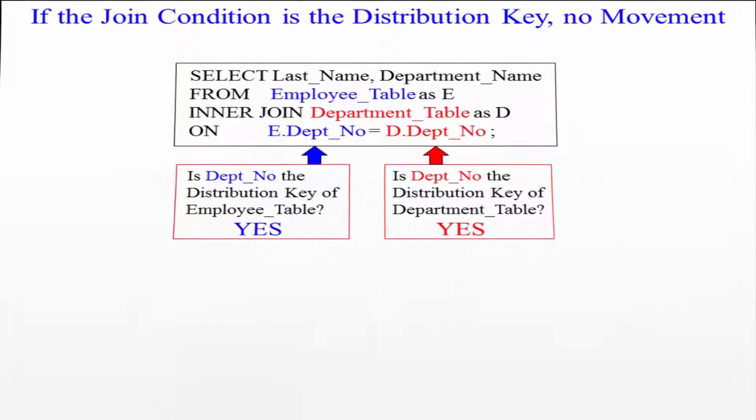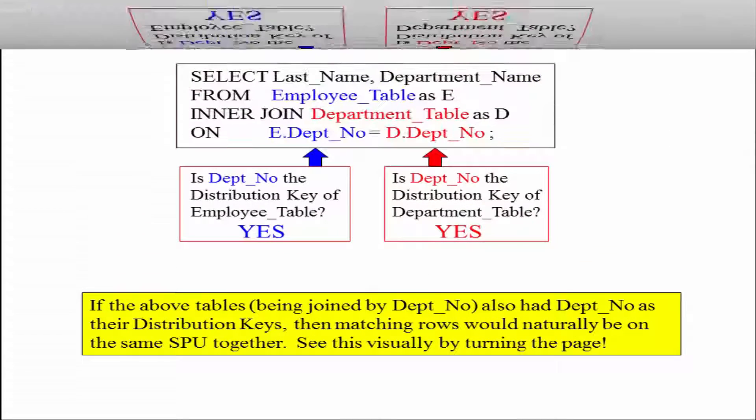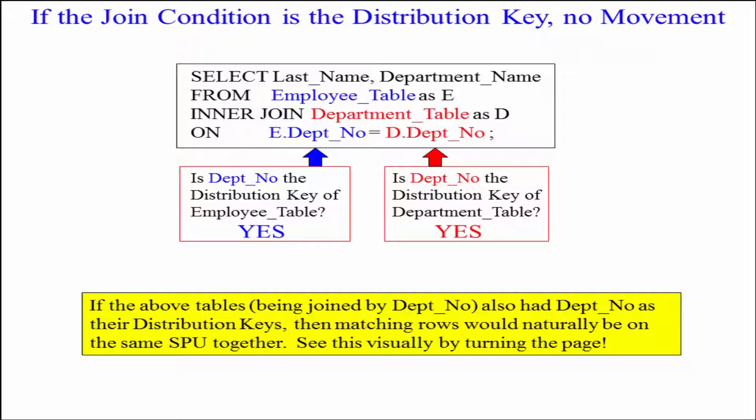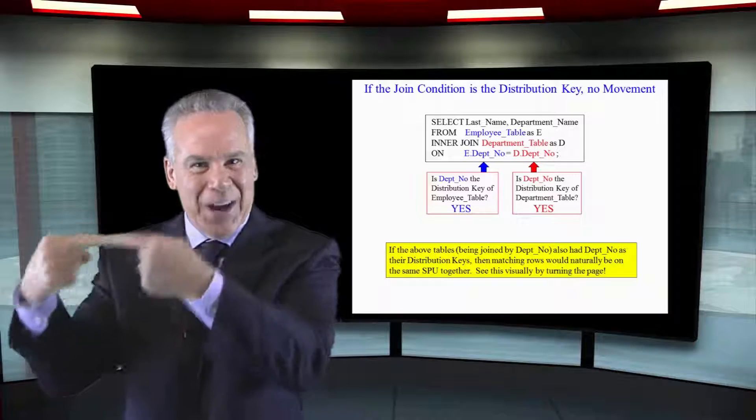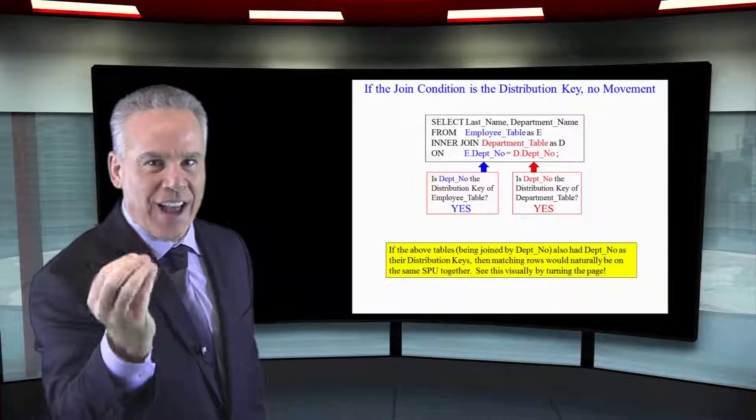Since both of these have the same distribution key of Depno and that's the join column, there is no data movement. The matching rows were hashed and they went to the SPU that they're supposed to, and they're all matched up. That's great design.